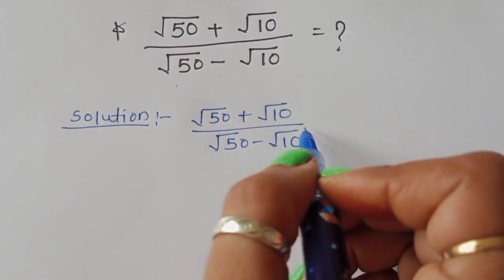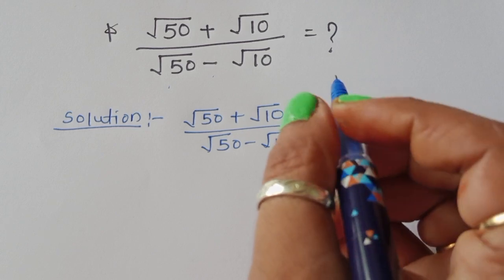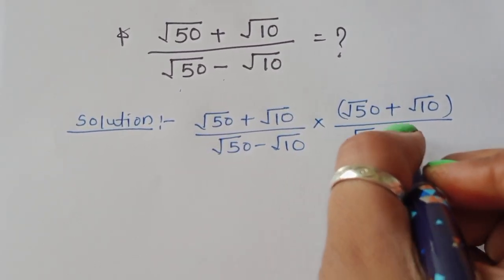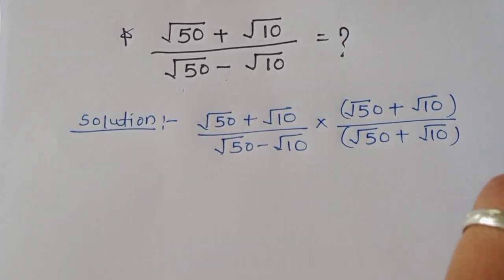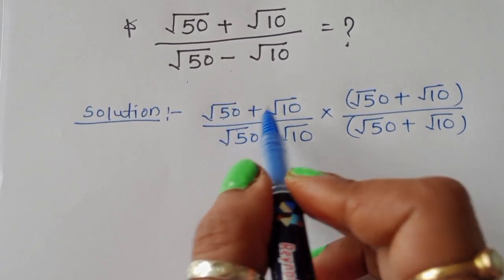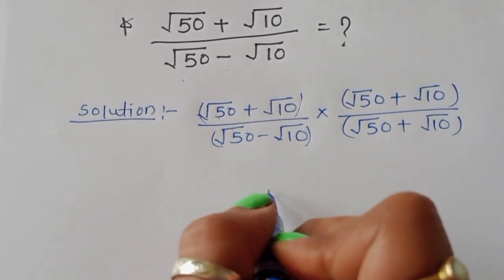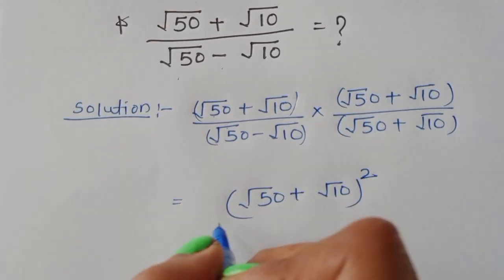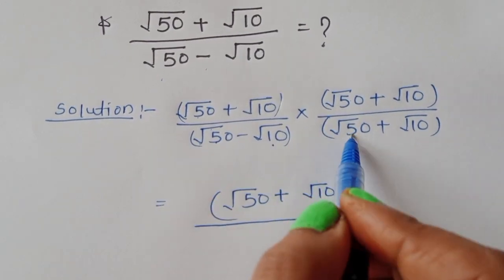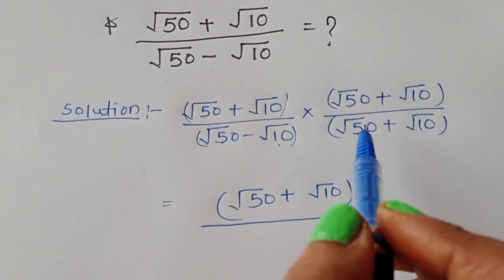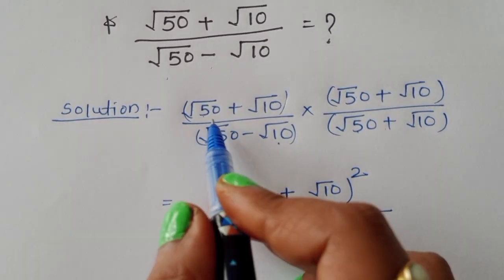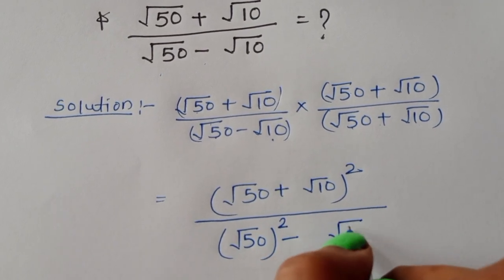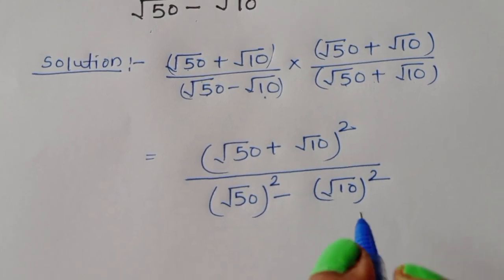We can do one thing here — we can multiply with the conjugate pair of the denominator. So we multiply both numerator and denominator by square root of 50 plus square root of 10. When we multiply, the numerator becomes square root of 50 plus square root of 10, whole square. In the denominator, square root of 50 minus square root of 10 times square root of 50 plus square root of 10 gives us a minus b times a plus b, which equals a squared minus b squared, where a is square root of 50 and b is square root of 10.